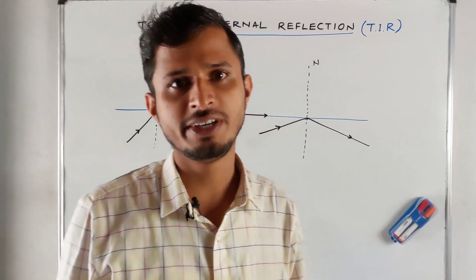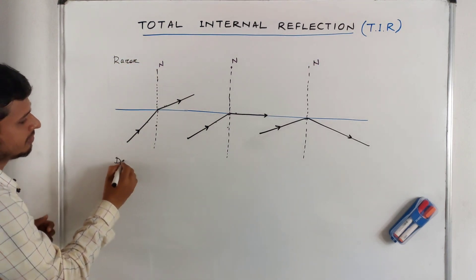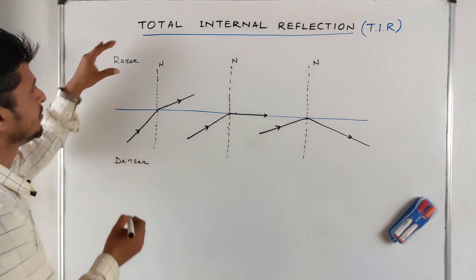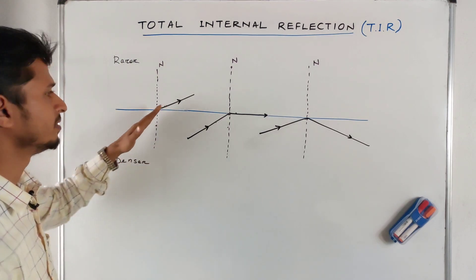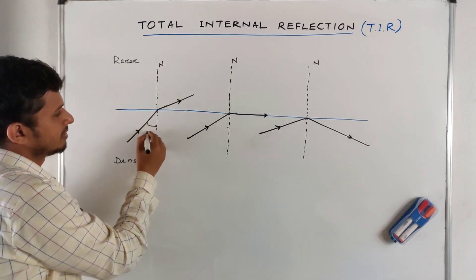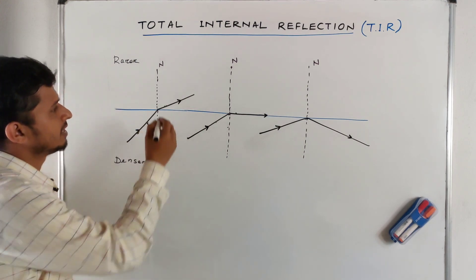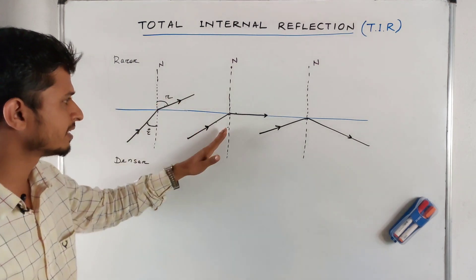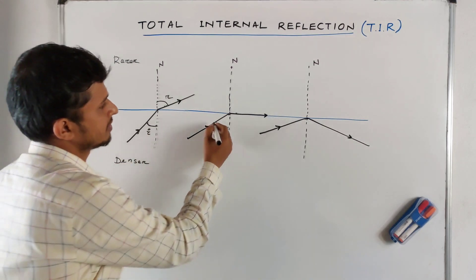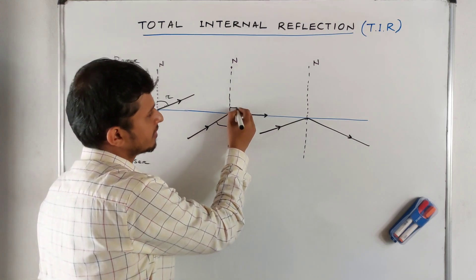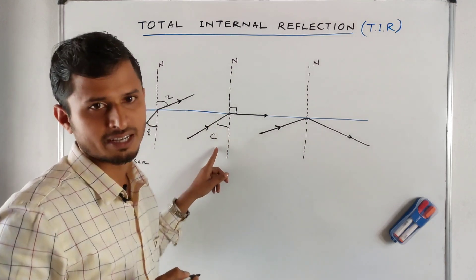Total internal reflection, TIR. Consider two media: the rarer medium above and the denser medium below. The ray of light moves from the denser medium to the rarer medium. In the first case, there is a normal angle of incidence and angle of refraction. In the second case, the angle of incidence is greater, and when the angle of refraction is 90 degrees, the angle of incidence is called the critical angle.